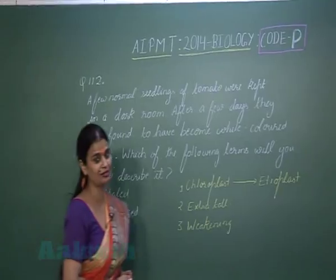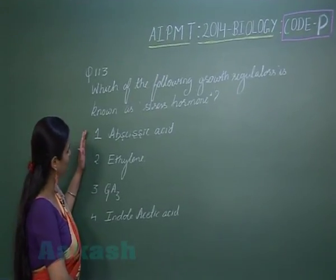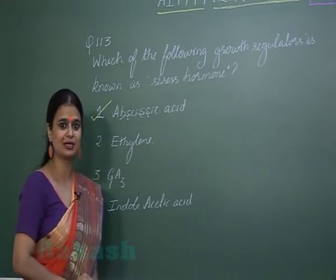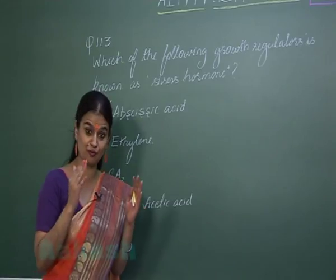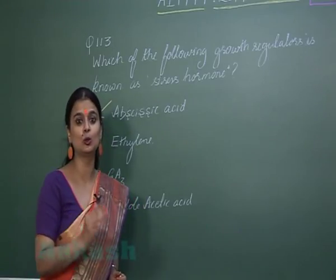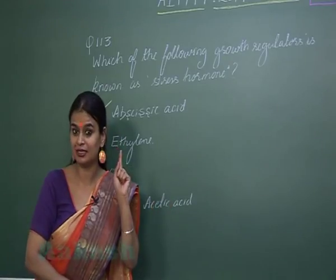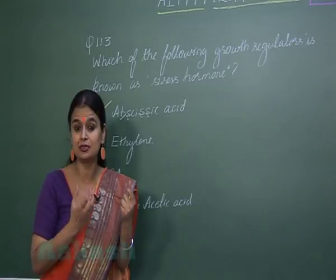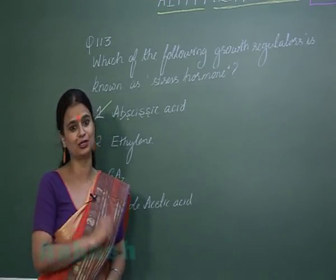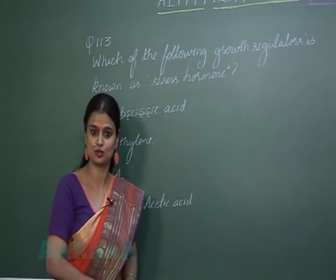Let's proceed towards question number 113: which of the following plant growth regulators is known as the stress hormone? The plant growth regulator known as the stress hormone is ABA — abscisic acid. Under water stress conditions in the plant, abscisic acid results in closure of stomata, decreasing further water loss and allowing the plant to conserve water. This is how abscisic acid is called the stress hormone.